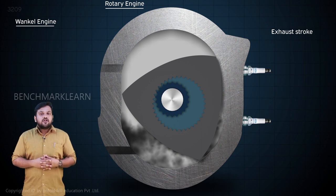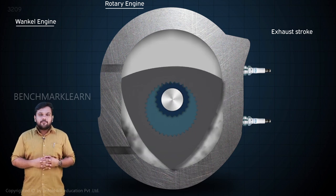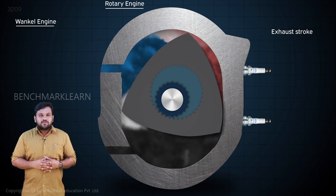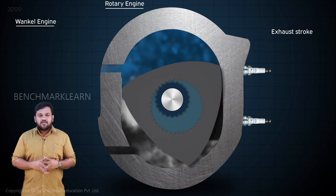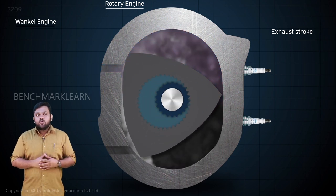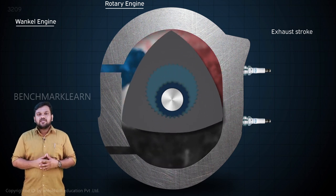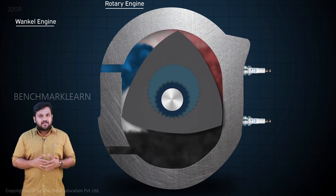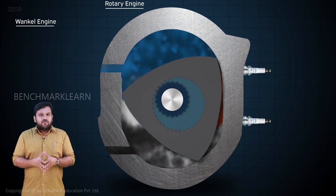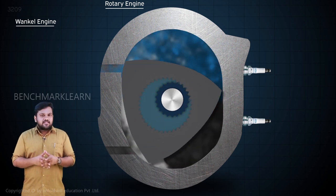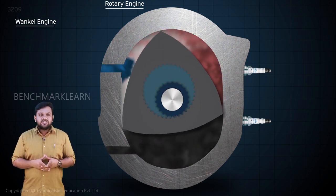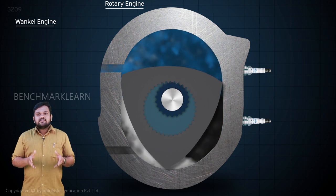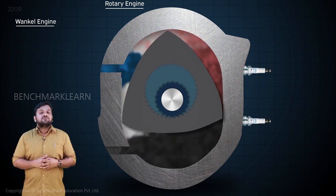As there are no reciprocating parts, its operation is smooth. Nowadays, Wankel engines are not used for commercial purposes. Till a few years back, they were used in ships and in automobiles such as cars and motorcycles.